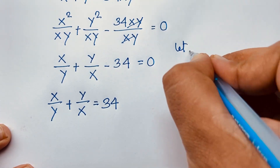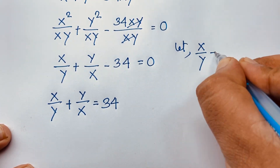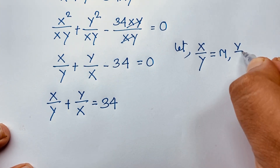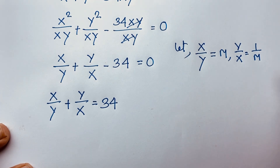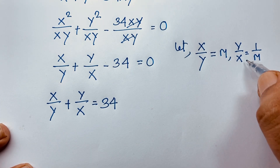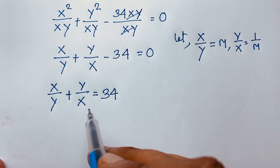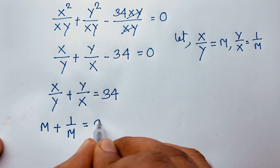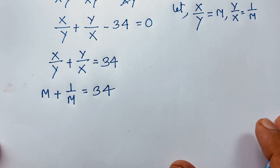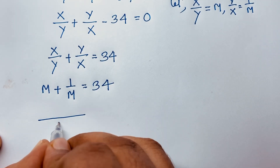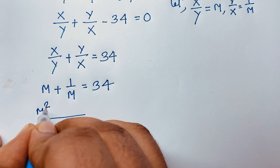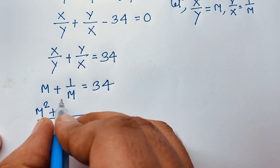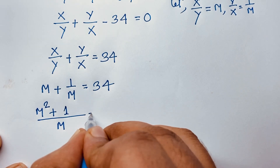Let m equal x/y. Then y/x is the inverse of m, so y/x = 1/m. Substituting into the equation gives m + 1/m = 34. Multiplying through by m, we get m² + 1 = 34m.